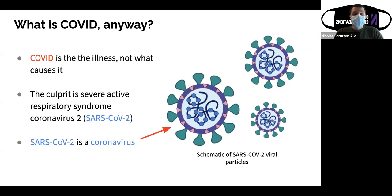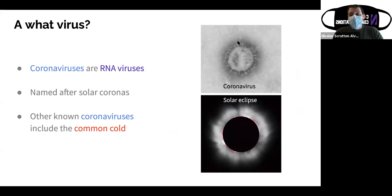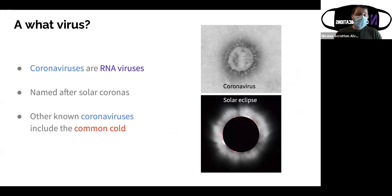It's a type of virus called an RNA virus. Fun fact: coronaviruses are actually named after the solar corona — the light that surrounds a solar eclipse — which reminded scientists of the shape of the virus seen under a microscope. While SARS-CoV-2 is obviously the most famous coronavirus right now, we've been dealing with coronaviruses for years, and one of the most common actually includes the common cold.